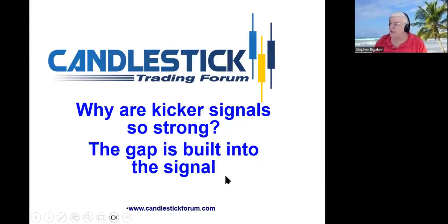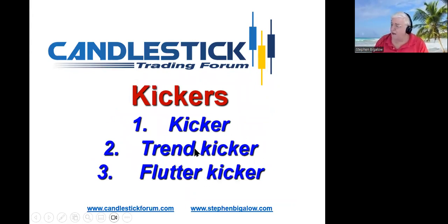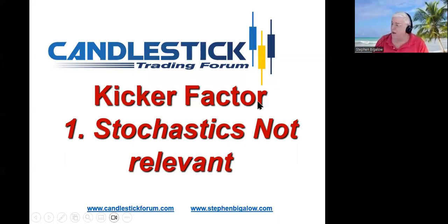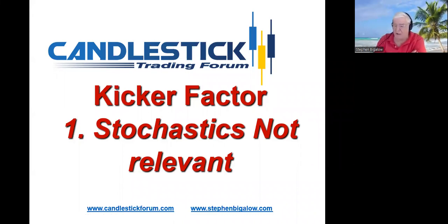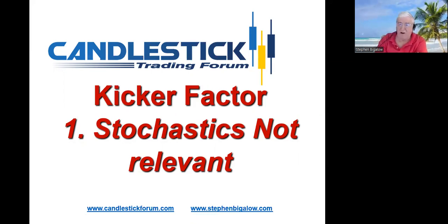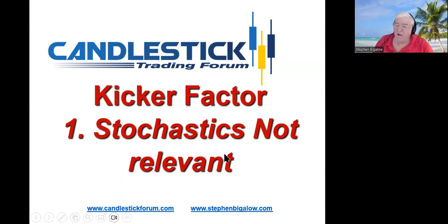Kicker signals are so strong because the gap is already built into them. There are three different types: the kicker signal, the trend kicker signal, and the flutter kicker signal. One of the basics of candlestick analysis is if you see a candlestick buy signal in the oversold area, the probabilities are strong that you're now in an uptrend. If you see a candlestick sell signal in the overbought area, probabilities are strong the downtrend's starting. The kicker signal is so strong it doesn't matter where it occurs in stochastics. I use stochastics at 12-3-3.